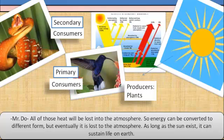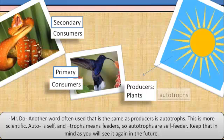Another word often used that is the same as producer is autotrophs. This is more scientific. Auto means self, and trophs means feeders. So autotrophs are self-feeders. Keep that in mind as you will see it again in the future.